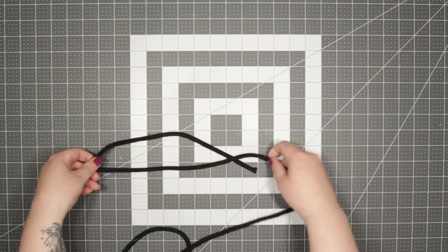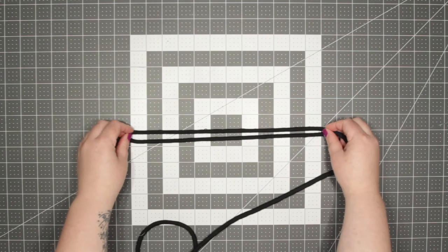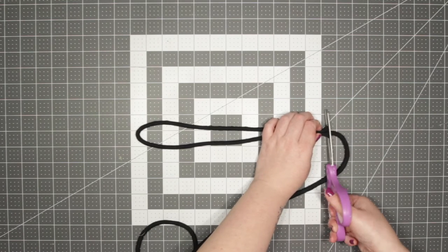Once you have everything marked, cut your cord. I just cut my cord to be doubled over 12 inches long on each end, so it's a total of 24 inches.